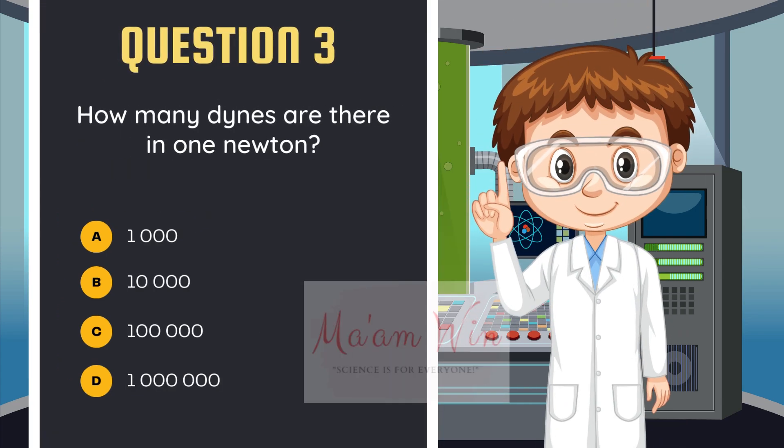Question number 3. How many dynes are there in 1 newton? Letter A, 1,000. Letter B, 10,000. Letter C, 100,000. Letter D, 1,000,000.